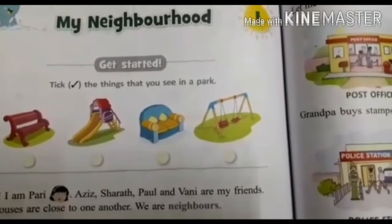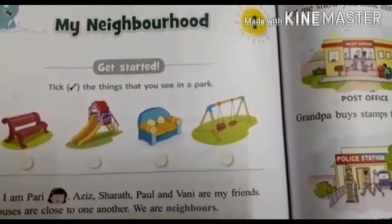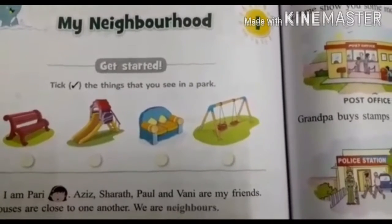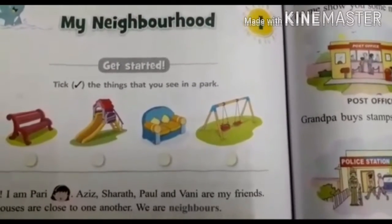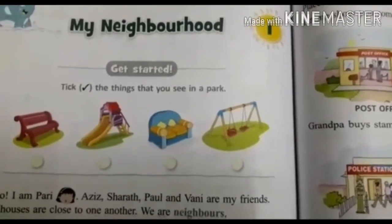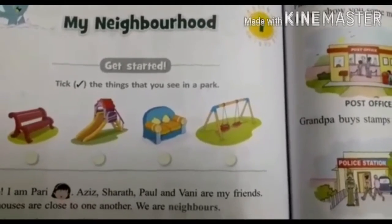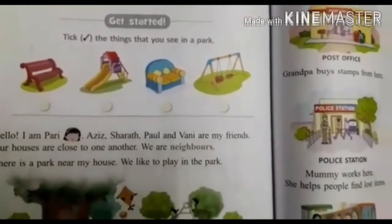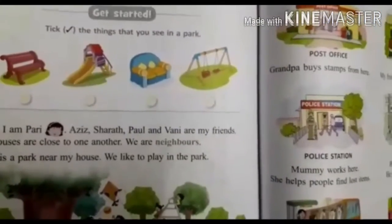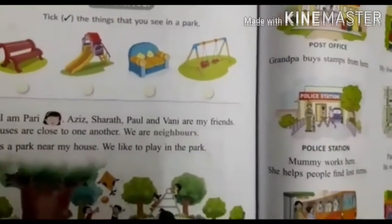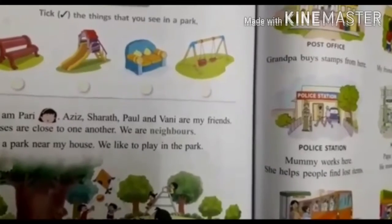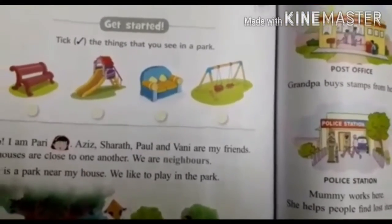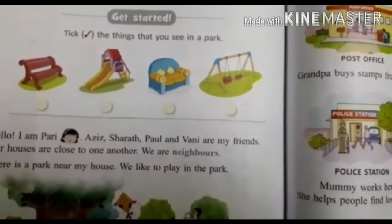Today we will start EVS Chapter Number One: My Neighborhood. Neighborhood kia hota? Neighborhood means paados — the area around a house is a neighborhood. Jo hamaari ghar ke aas paas hota hai, wu hamaara neighborhood hota hai.